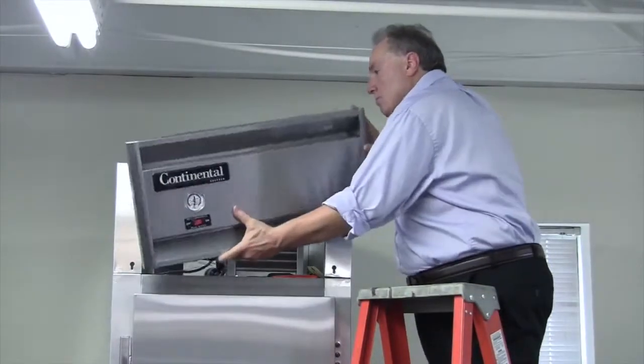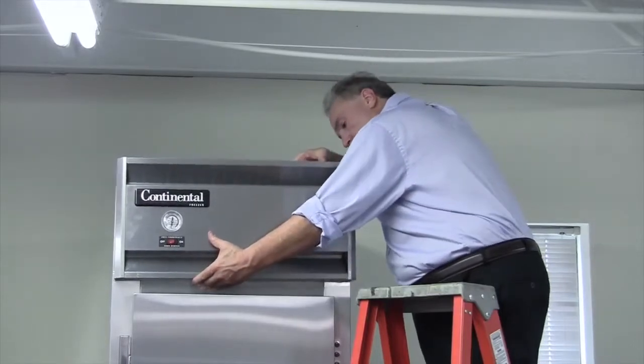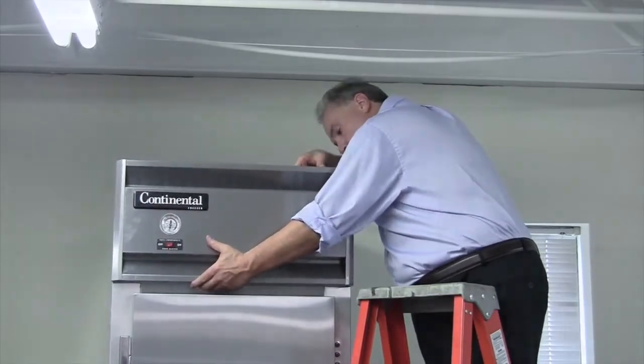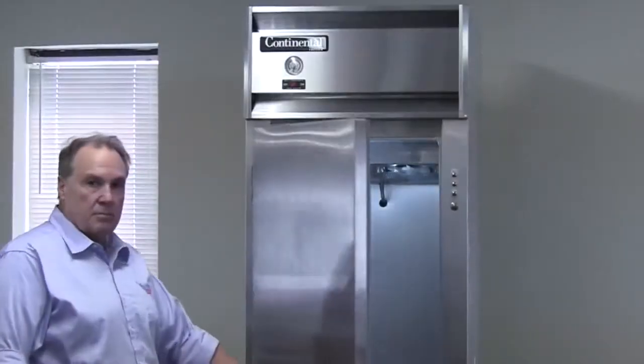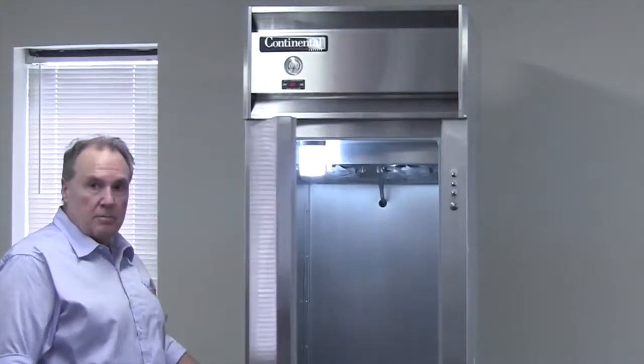Remount the grill into the four keyhole slots and tighten the four Phillips screws at the back of the grill. Restore power to your cabinet. Open the door a few times to make sure that the light goes on and off.